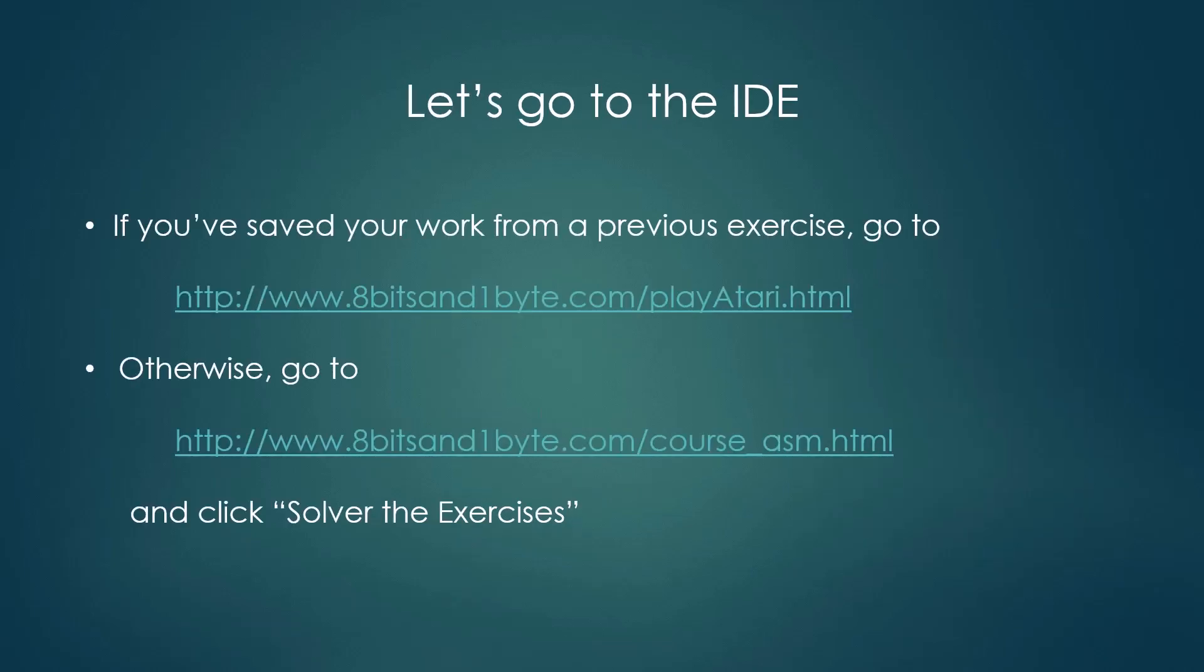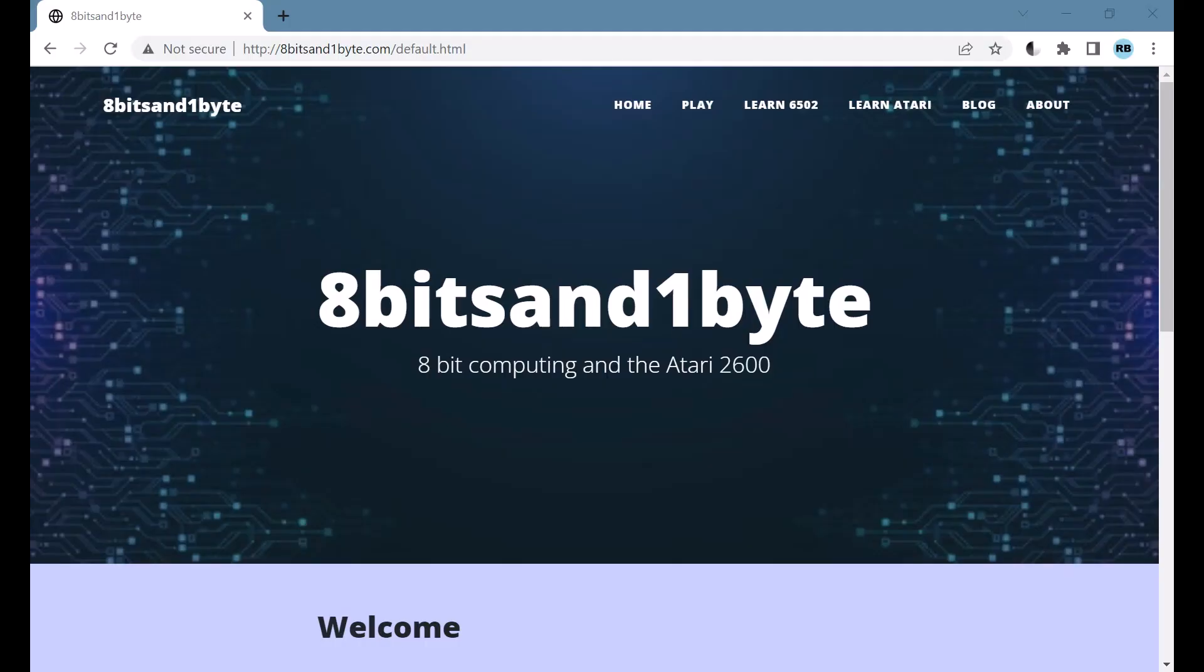That concludes my walkthrough of my offered 6502 multiplication algorithm. Let's go to the IDE and create the same algorithm for 8 bits. Here we are at the 8 bits and 1 byte website, ready to solve the exercise for this video. This exercise is relatively advanced and requires skills that you can learn in the videos entitled Shift and Rotate Instructions and the Multibyte Shift. If you haven't watched these videos, you may want to do that now.